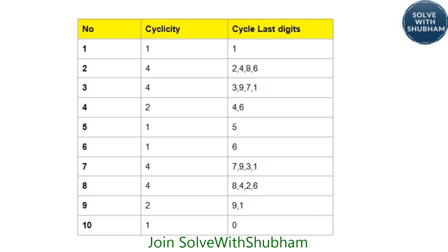Similarly, you can find cyclicity for all digits. Here is a table: cyclicity of 2 is 4 (pattern: 2,4,8,6), cyclicity of 3 is 4, cyclicity of 4 is 2, 5 raised to any power always ends with 5, 6 raised to any power always ends with 6, cyclicity of 7 is 4, cyclicity of 8 is 4, cyclicity of 9 is 2, and 10 raised to any power always ends with 0. You don't have to specifically memorize all these because most are 4. Even for 9, since 9 to the power 2 ends with 1, 9 to the power 4 also ends with 1, so you can use cyclicity 4 as a common value for all digits.